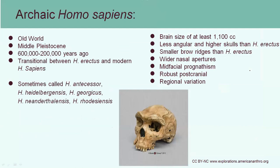What makes you a member of the archaic Homo sapiens? Basically, they lived in the Old World — none of these species ever made it to North or South America. They existed between 200,000 to 600,000 years ago and were a transitional species between Homo erectus and modern-day Homo sapiens, with quite a few examples including Neanderthals.